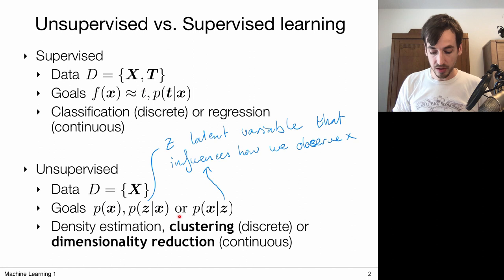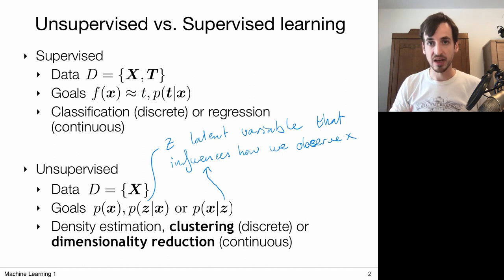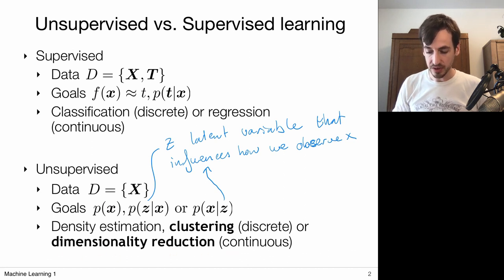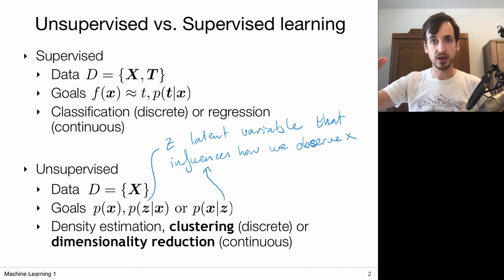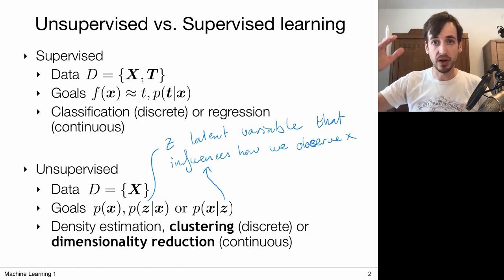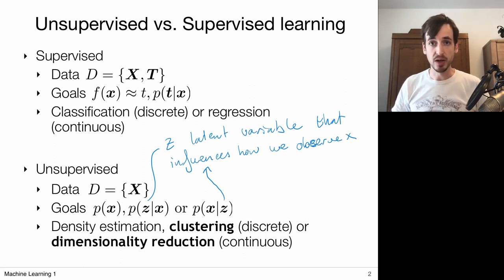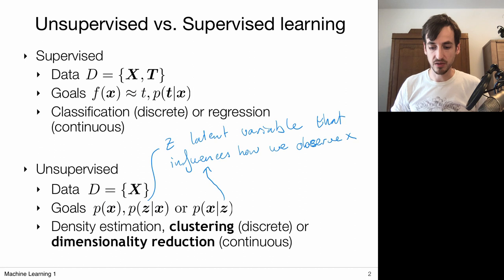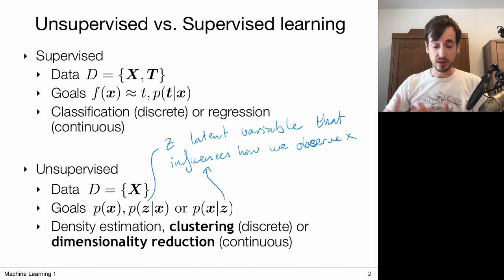Such problems relate to clustering — clustering my data points based on this latent variable, which in this case would be the city. But we can also use unsupervised learning for dimensionality reduction. Suppose I have measurements like house price, property size, and garden size, and maybe they can be reduced to one or a few values. Maybe just knowing the property size tells me a lot about the house price and garden size. So part of unsupervised learning is to uncover the structure that governs my data so that I can deal with fewer parameters in the end.